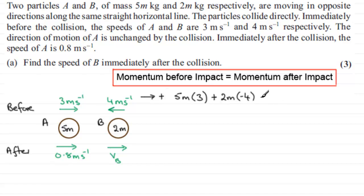Now this is equal to the total momentum after impact. So if we start with A again, it'll be its mass 5m times its velocity. Its velocity has a speed of 0.8 meters per second, and it's to the right in the positive sense, so it's going to be times 0.8.